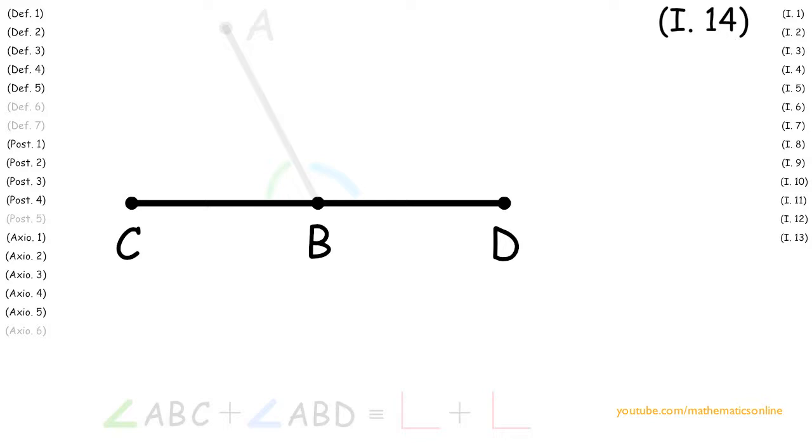Well Euclid says that any other line that we pick to be in a straight line with BC will always lead us to a contradiction. To demonstrate this, suppose we pick line BE to be in a straight line with BC, therefore line CE is a straight line.